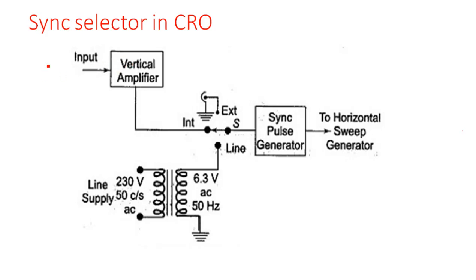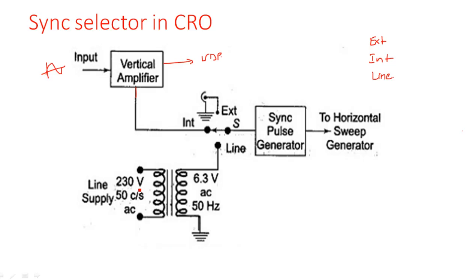The input signal that is applied here — whatever signal you are going to view on the CRT screen — is applied as input to the vertical amplifier. The output of this amplifier is given to the vertical deflection plates through the delay line, and the same signal is given to the switch at the input of the pulse generator. There are three types of waveforms: external signal, internal signal, and line supply.